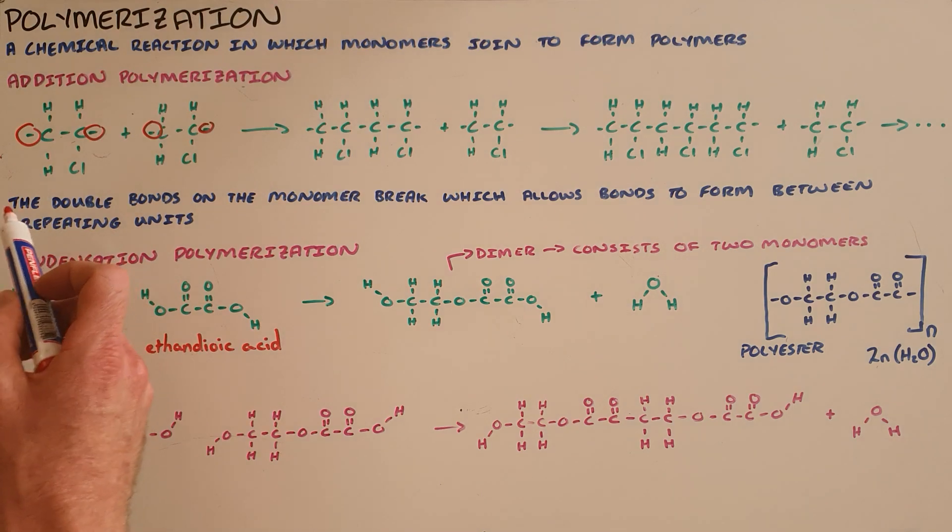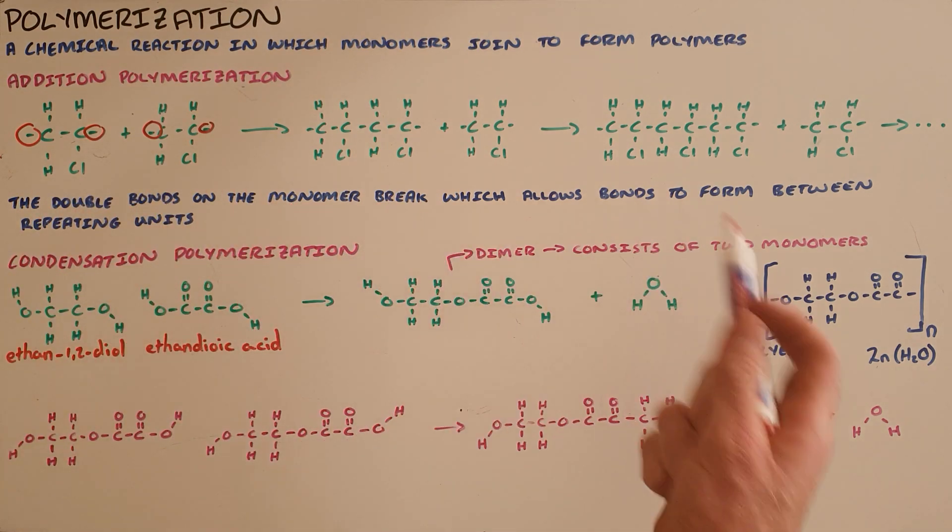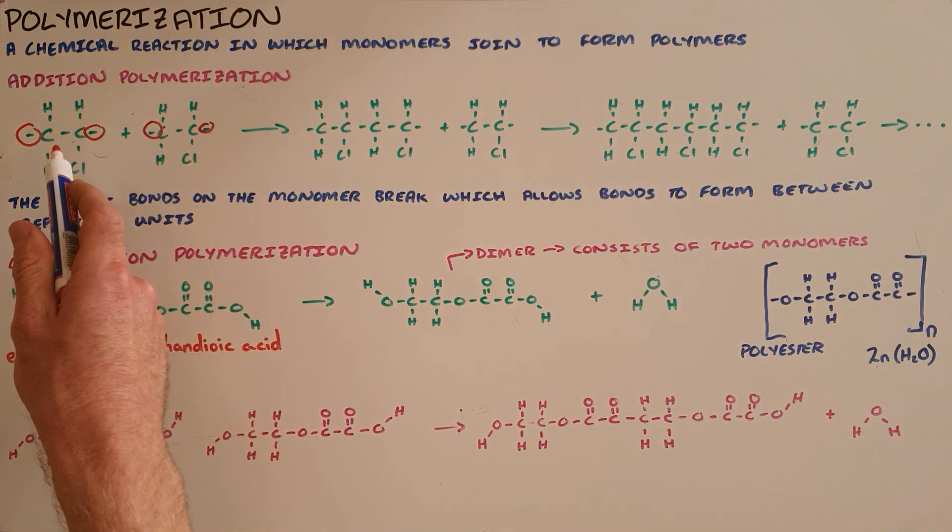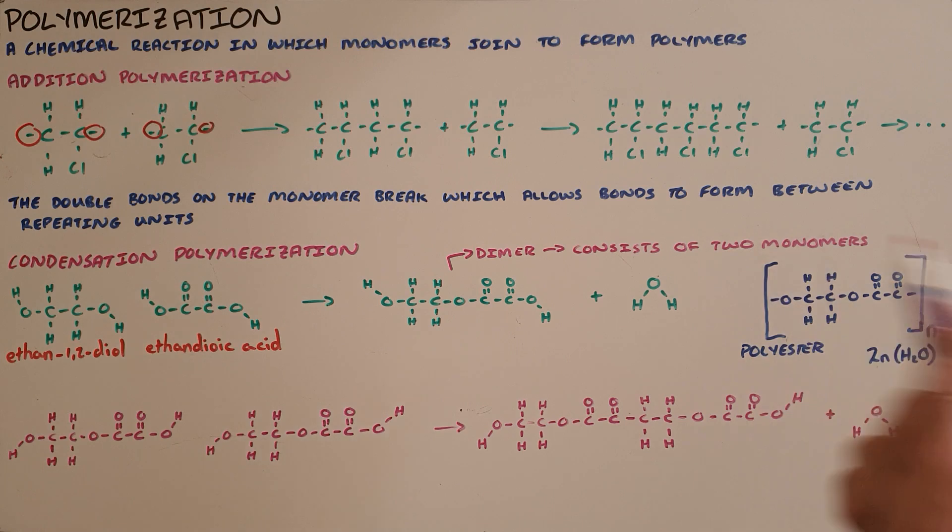So addition polymerization starts with a double bond on the monomer breaking, which allows it to form repeating units that attach to each other and form the polymer polythene.